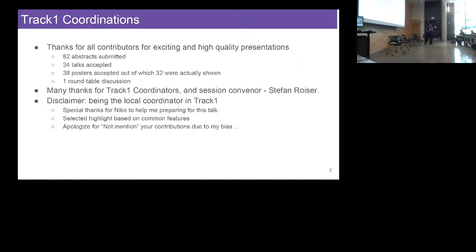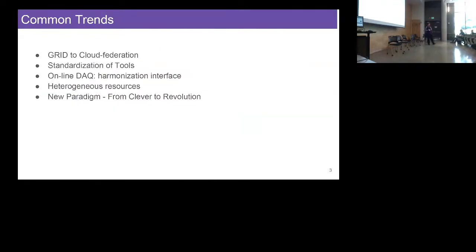For this talk I would like to say special thanks to Nicole for helping prepare it. Due to several constraints, all the Track 1 coordinators are not in this room, so I will try to summarize based on highlighted selections based on my own bias — I apologize if I didn't mention your contributions. I will categorize the Track 1 summary based on five common trends: grid-to-cloud federation, standardized tools, online DAQ harmonization, heterogeneous resources, and new paradigms.